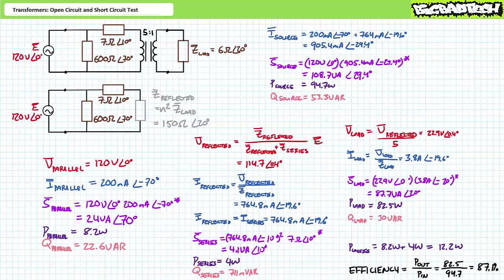The power consumed by the parallel impedance inside the transformer equivalent circuit doesn't deviate at all from the rated conditions, whereas power consumed by the series impedance drops below the rated conditions because we're not at rated current — this is ultimately a function of load demands. The short circuit test gives you an upper limit of what you might expect to observe at rated conditions. Additionally, it takes 22.6 plus 0.711 VARs — roughly 23.3 VARs — of reactive power just to get the transformer to work.